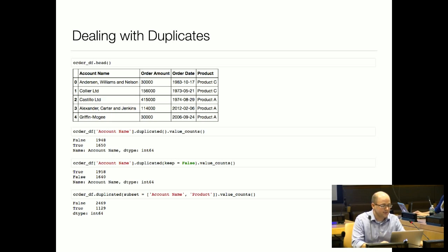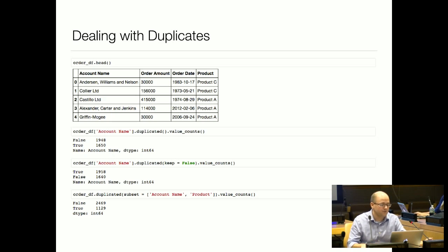One thing to know about the duplicated method is that by default it marks the first in a set of duplicates as not duplicated and the rest as true. There's an argument called keep, which defaults to 'first'. You can also set it to 'last' so it does the opposite. Or you can set it to False, as in the next statement — when you say .duplicated(keep=False) it flags anything that's part of a duplicate group as true. That's often helpful if you want to split a DataFrame into the part that has duplicates and the part that doesn't.